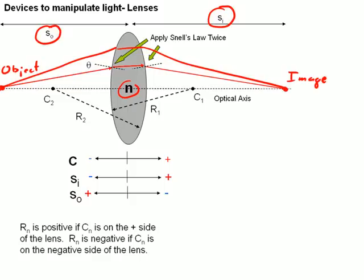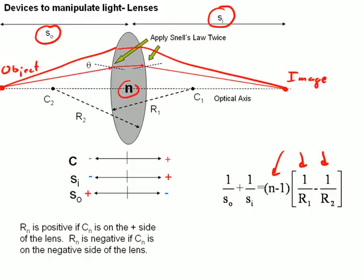But if we go through and use these sign conventions for an index of refraction, a lens with index of refraction n, the equation that describes the relationship between the image and the object distance and the design parameters of the lens, which remember the index of refraction and the curvatures of the surfaces R1 and R2, is this equation right here.